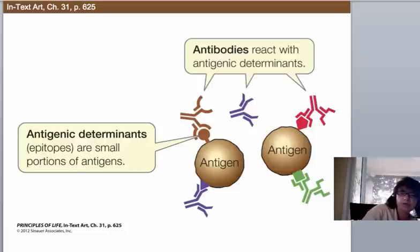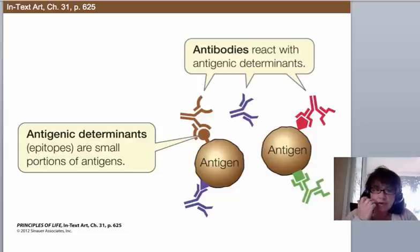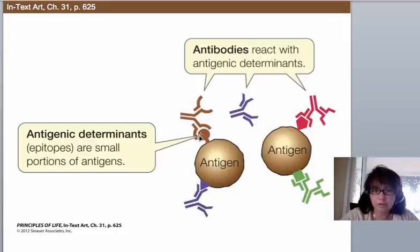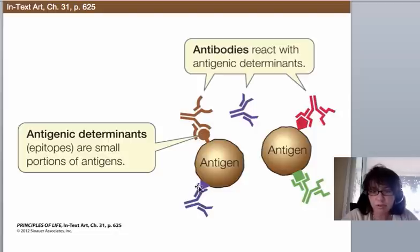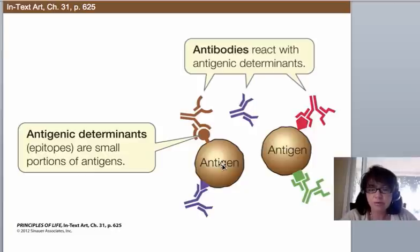What is an antigen? An antigen is basically something foreign — for the most part, a protein. Proteins are globular 3D structures, and there are parts of proteins that are more different than others and more likely to elicit an immune response. Those are called the antigenic determinants. So an antigen is that foreign molecule, usually a protein, and the antigenic determinant is the part you actually make your response against.